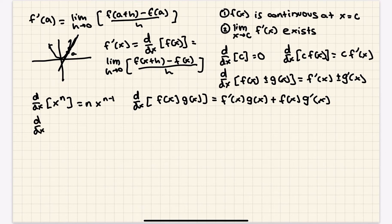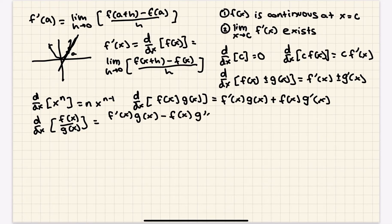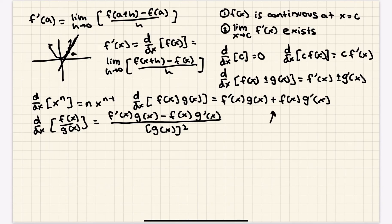Finally, the quotient rule: the derivative of f(x)/g(x) equals f'(x)·g(x) minus f(x)·g'(x), all over g(x) squared. This is the most complicated of them all. Order matters here because of the subtraction in the numerator — unlike the product rule where you have addition. Make sure to memorize the correct order.